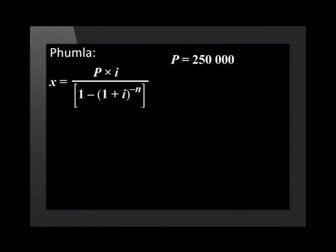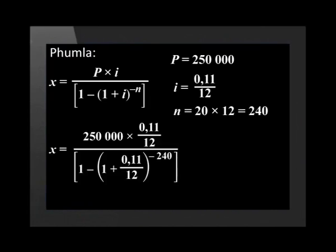We are going to use this formula to determine the equal monthly installments of Pumla and Nkosi. In Pumla's case, P equals 250,000, i equals 0.11 divided by 12, and n equals 20 years multiplied by 12 months, which equals 240 repayments. Therefore, x equals 250,000 multiplied by 0.11 divided by 12, over open bracket one minus open bracket one plus 0.11 divided by 12 close bracket to the power of minus 240 close bracket. Punching these values into our calculator gives us x equals R2,580.47. This is Pumla's monthly payment on her loan.